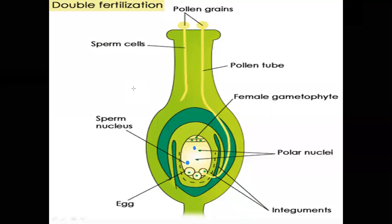Dear students, double fertilization in angiosperms — flowering plants. Double fertilization is one of the unique characteristic features of angiosperms, and it was discovered by S.G. Nawaschin in Fritillaria and Lillium plants.